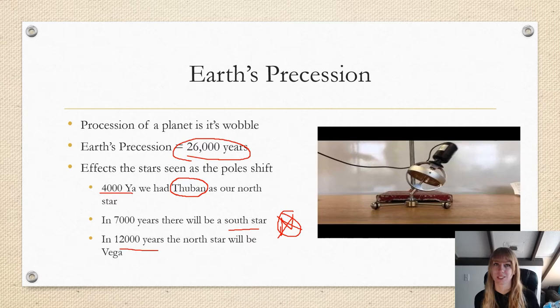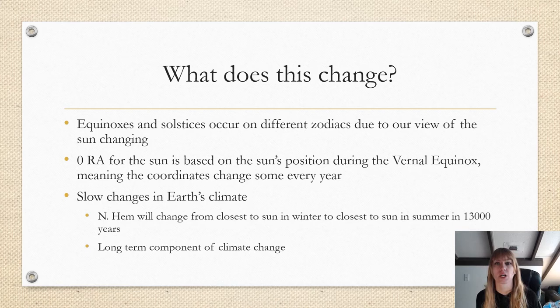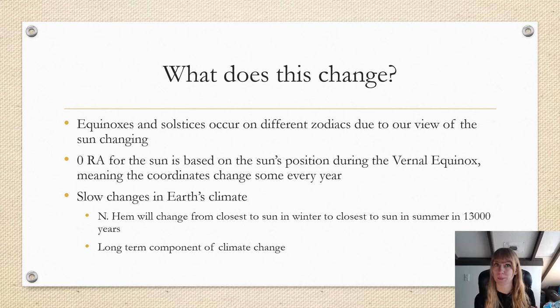In 12,000 years our north star will be Vega. So that shift is pretty important. Well, what does this change? It can't be that important, right? Well, it doesn't change our orbit. The ecliptic and the zodiac remain the same, but the equinoxes and the solstices will occur on different zodiacs. Basically, instead of having Sagittarius being in December, it will actually shift. Sagittarius will be somewhere else in a different season. About one thousand years ago, the first day of summer actually occurred when the sun was in Cancer, which is why we have the name the Tropic of Cancer. Today, however, the first day of summer occurs when the sun is in the Gemini constellation. That's why people born between June 1st and June 21st are considered Gemini. It used to be Cancer. Astronomers base the zero point of right ascension for the sun on its position during the vernal equinox, so the celestial coordinates change some every year because we are slowly changing in our direction.